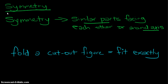For this chapter, we are going to start on the topic of symmetry. First and foremost, you must know what symmetry is. For something to have symmetry, it must have a similar part facing each other or around an axis.